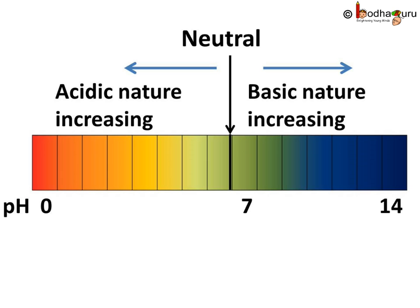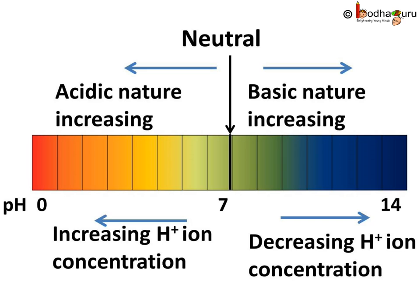This pH scale is actually the measurement of hydrogen or hydronium ion concentration. Higher the hydronium ion concentration, lower is the pH value. The pH of a neutral solution is 7, and values less than 7 on the pH scale represent an acidic solution. As the pH value increases from 7 to 14, it represents an increase in OH ion concentration in the solution — that is, the concentration of hydroxide ion increases and this increases the strength of the alkali. So the strength of acids and bases depend on the number of hydrogen ions and hydroxide ions produced respectively.